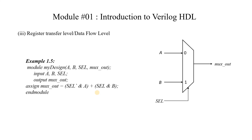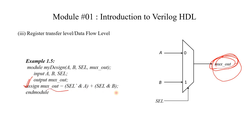The third level is register transfer level or data flow level. Here we are given a Boolean equation representing the output of the circuit. For a MUX, the equation for MUXOUT is: select_bar·A + select·B. To model any Boolean expression, we use the assign statement. In data flow or register transfer level modeling, we write the assign statement with the Boolean expression for the given circuit.